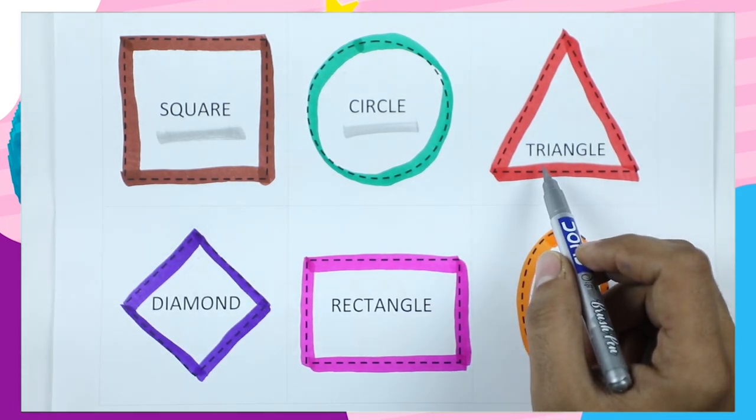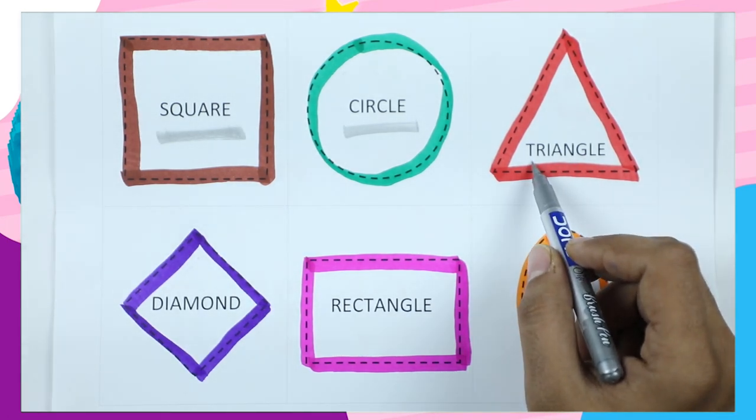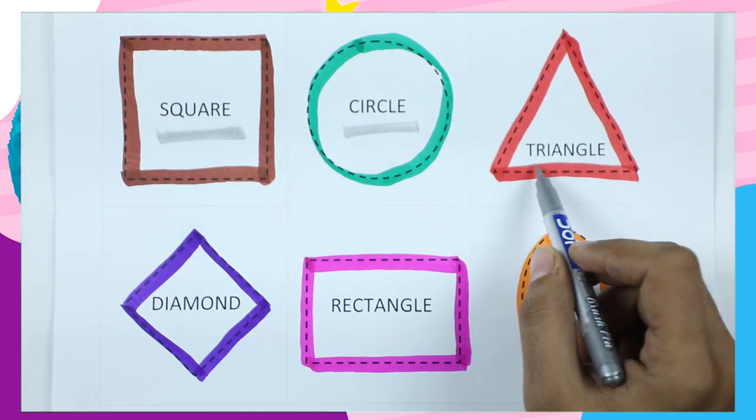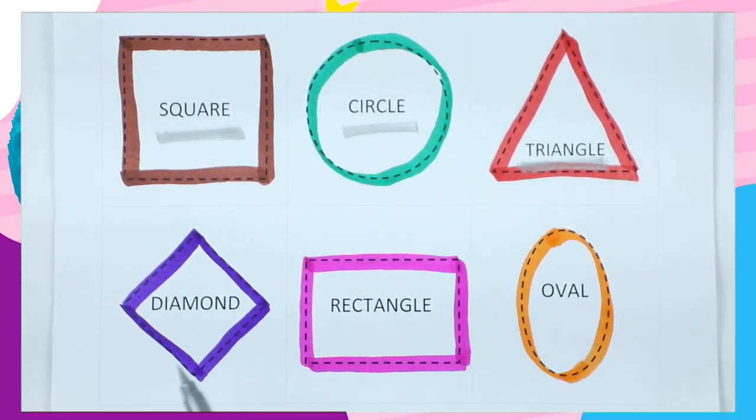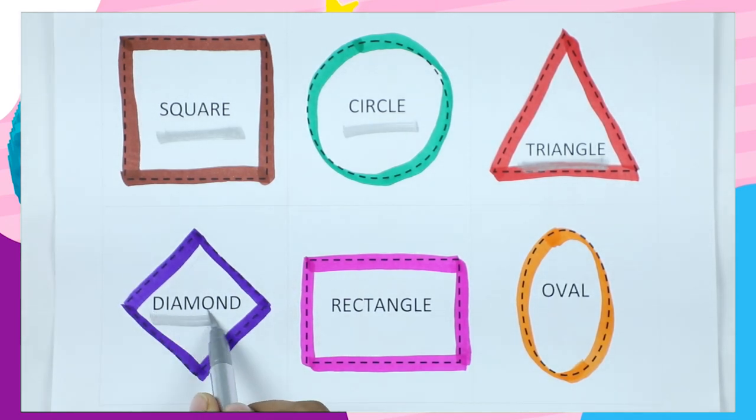Which shape is this? Triangle. T-R-I-A-N-G-L-E. It's a triangle with red color.